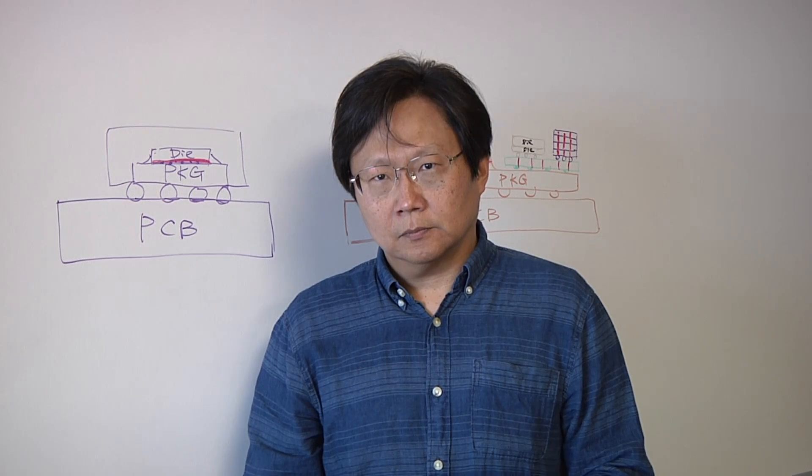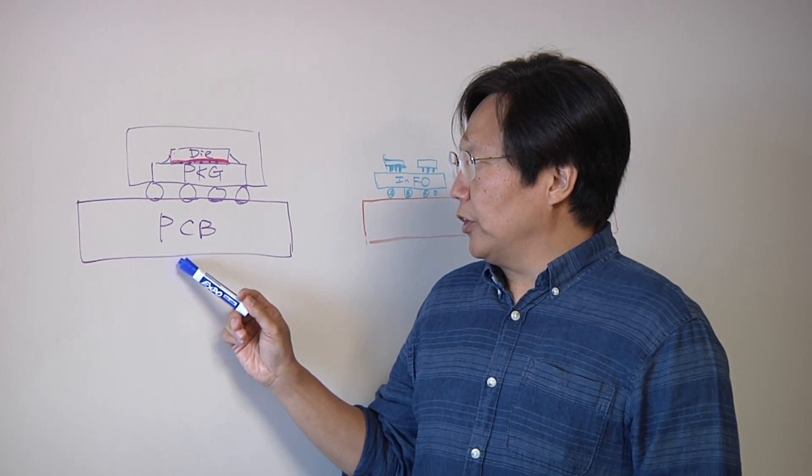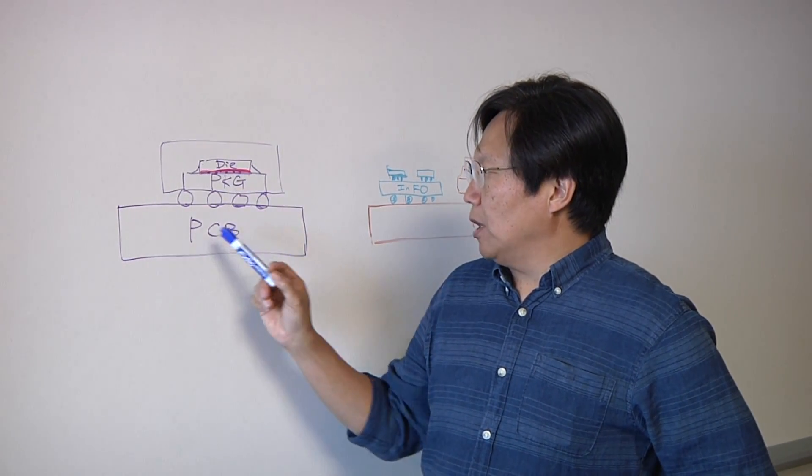Why don't you draw this out for us? On the left here, this is a traditional package. You have a die package, you have a molding compound sitting on the PCB. Traditionally, that's a simple structure of the package.